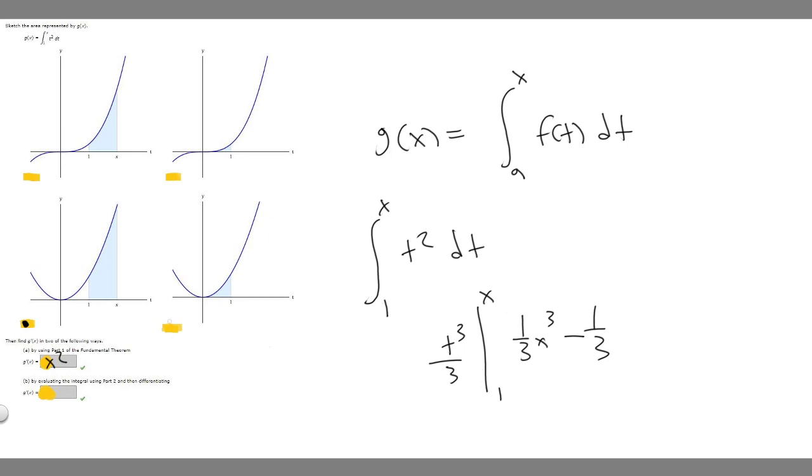Well, now we've got this, but then it says we've got to differentiate. So we have this function here, 1 over 3 x cubed minus 1 over 3. If we differentiate 1 over 3 x cubed, we move the 3 down. It's going to become 3 over 3 x, and then subtract 1, so x squared. And then 3 over 3 just becomes 1, so it's x squared.